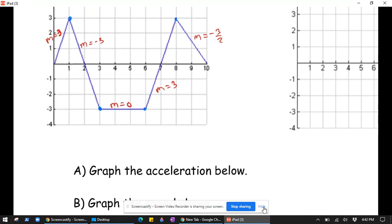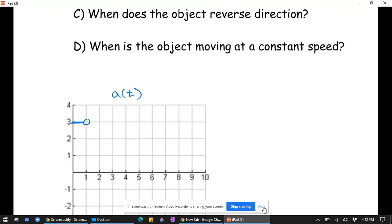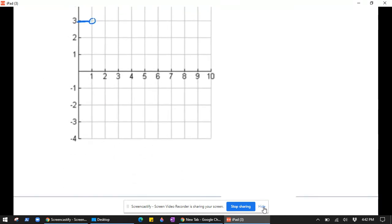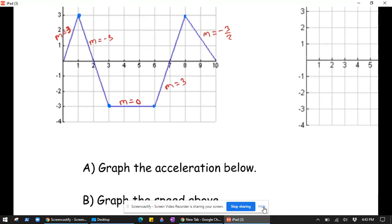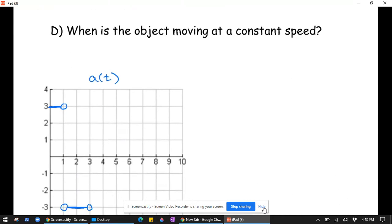And then on the next interval, it's from 1 to 3, it's negative 3. And then from 3 to 6, it's 0.